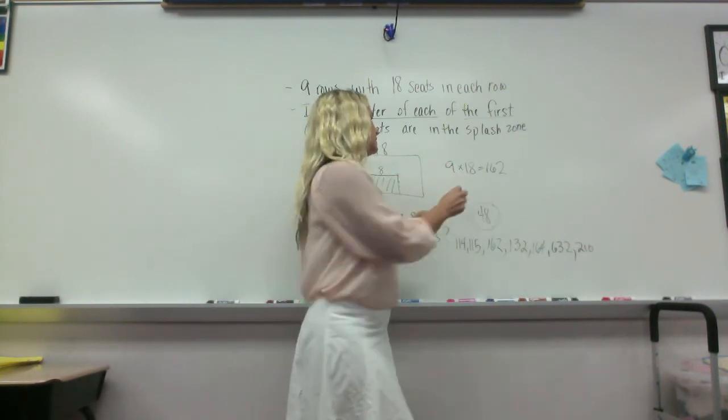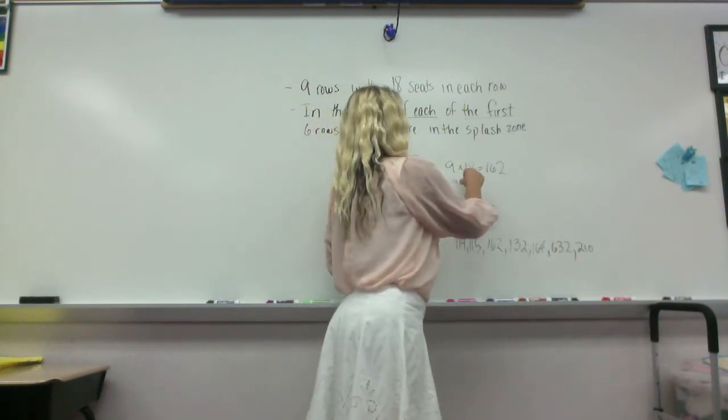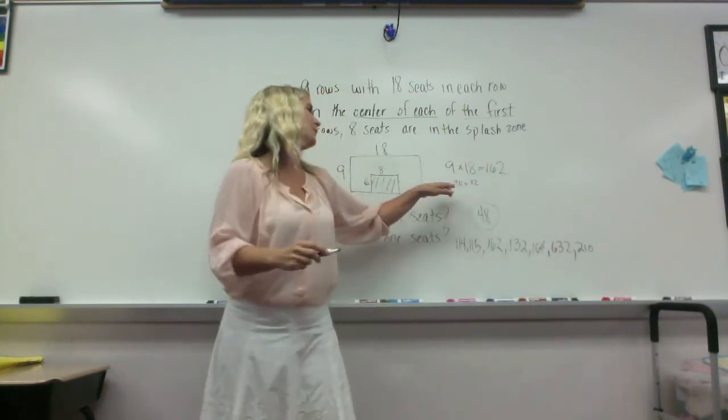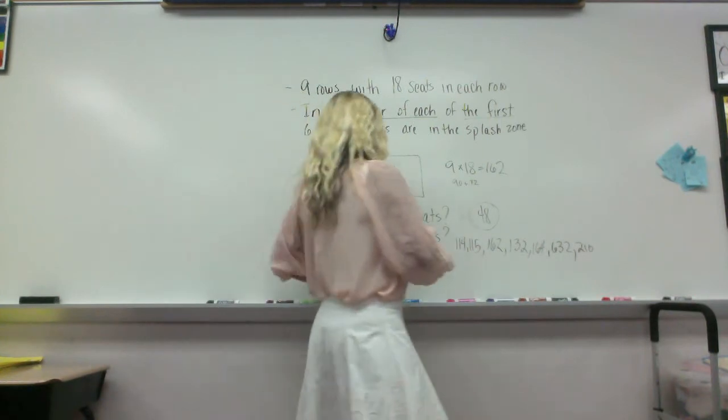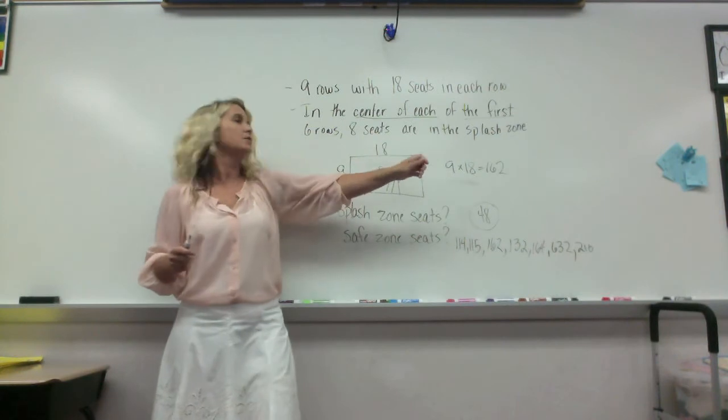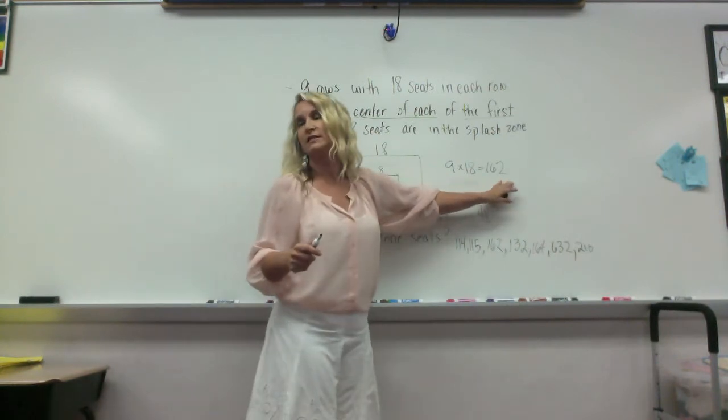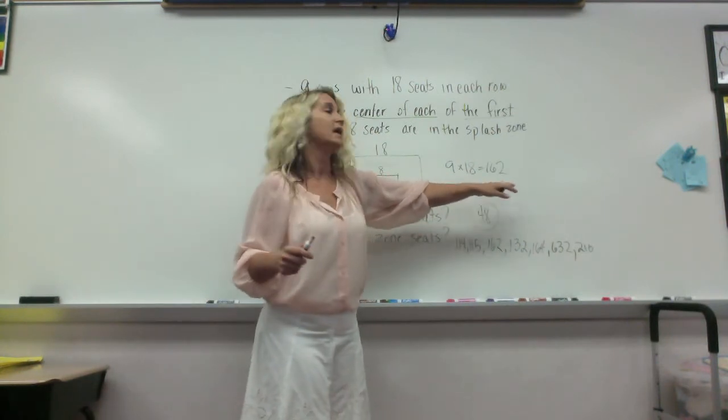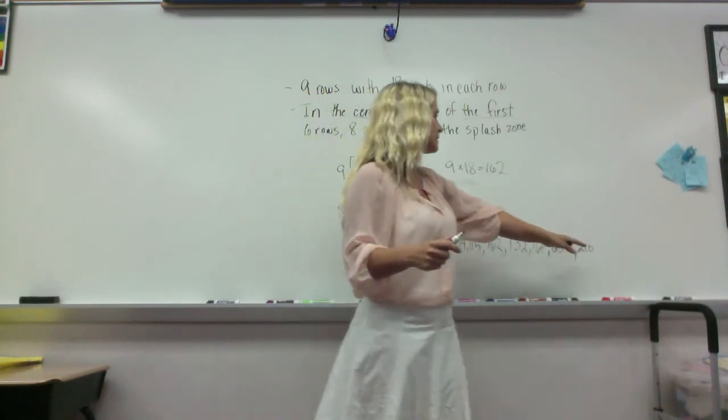Let me think. So 90 plus 72 is 162. So yes, 162. Okay, so how many of you got that nine times 18 equals 162?